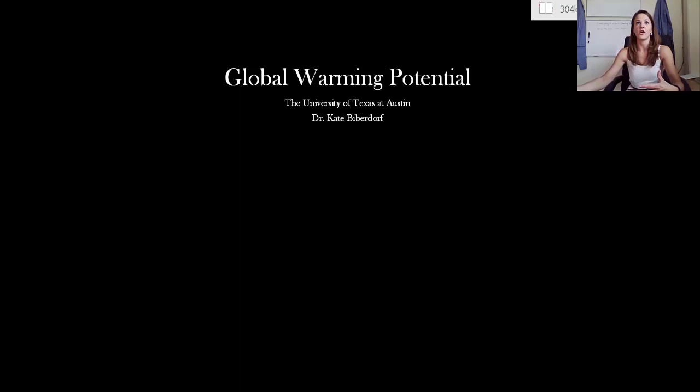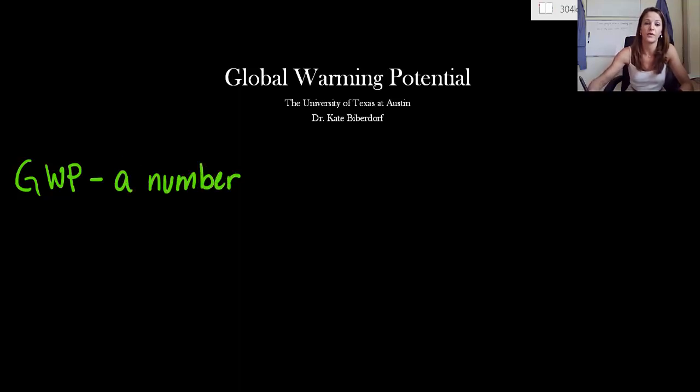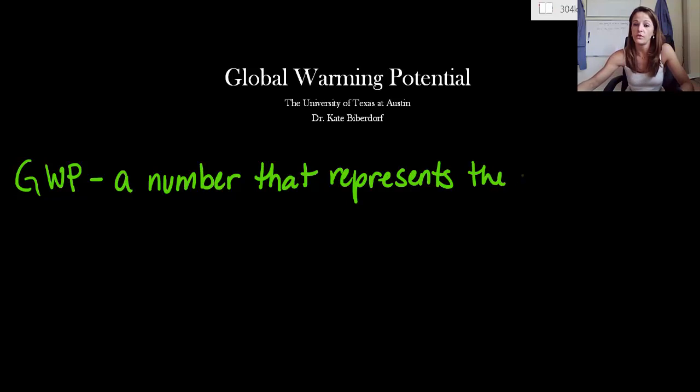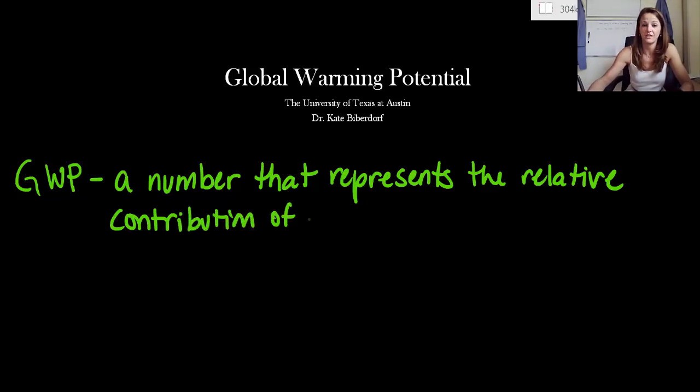In order to do this, we need to talk about them in a ranking system. A group of scientists came together and coined the term global warming potential, also referred to as GWP. A GWP is essentially just a number that represents the relative contribution of a gas toward global warming.